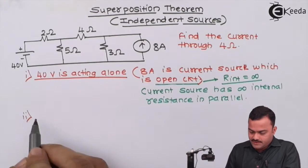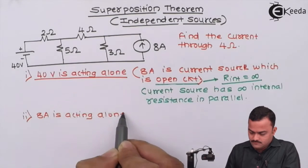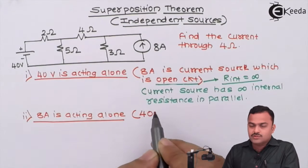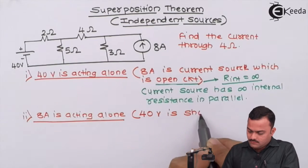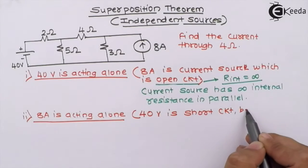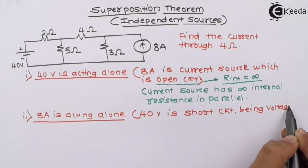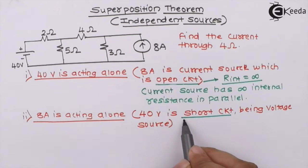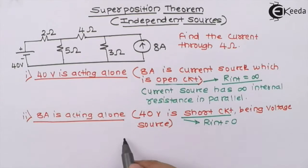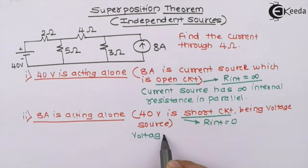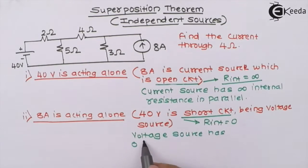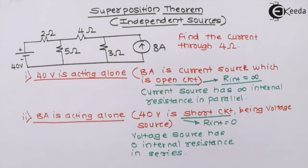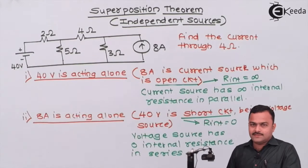Similarly, when considering the second source — the 8 ampere source acting alone — we should not consider the 40 volt source. Being a voltage source, we will short-circuit it. Why? Because short circuit implies zero internal resistance, and an ideal voltage source has zero internal resistance in series. So we short-circuit the voltage source.